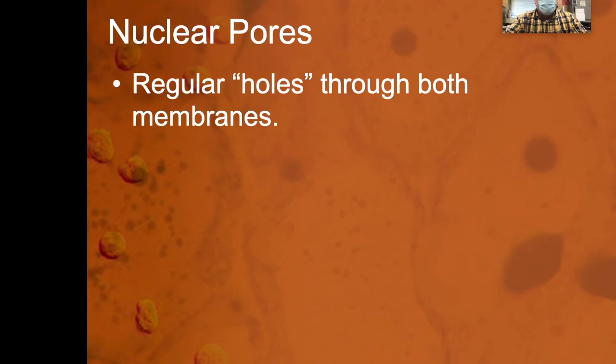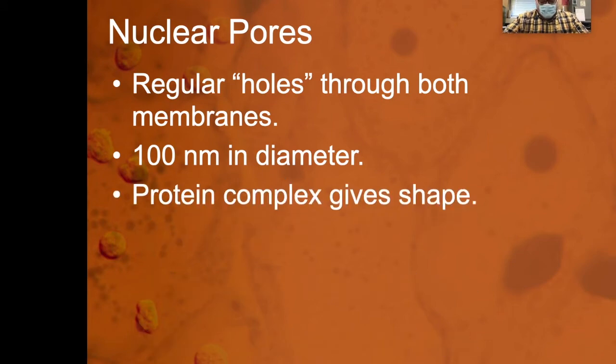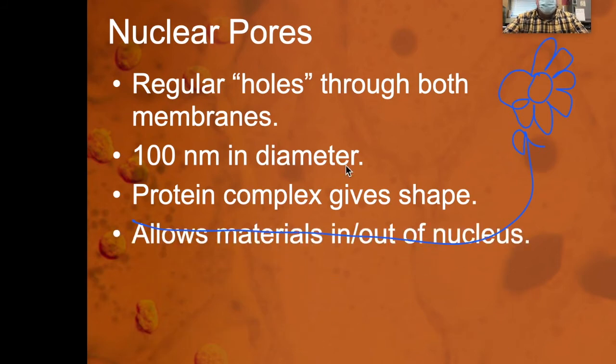Let's talk about the pores in a little bit more detail. Regular holes. When I say regular, I mean they sort of repeat over and over again. It's not like the holes are clustered in one spot. Those are 100 nanometers, if you care. And there's a protein complex that helps it maintain its shape. And obviously holes let things in and out. That's fairly intuitive. And we talked about some of the things that need to go in and out.